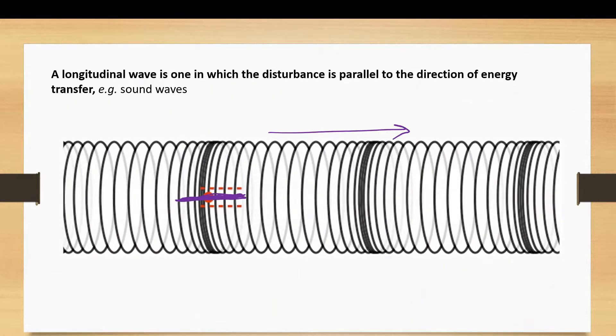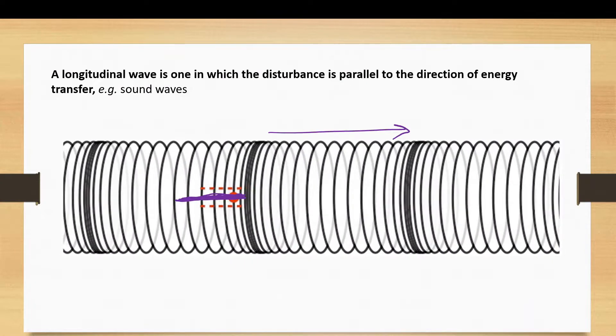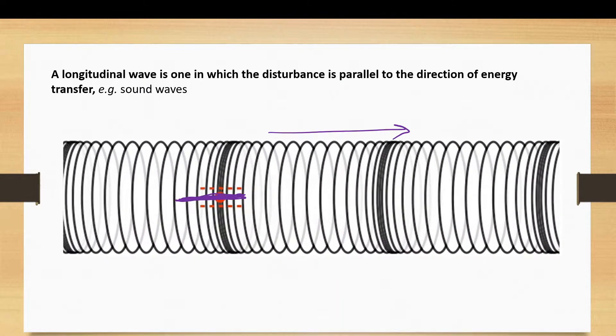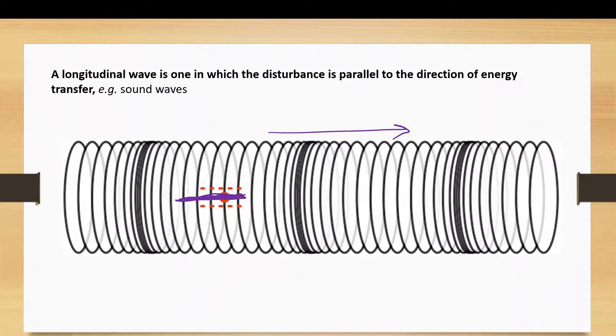Longitudinal waves are pressure variations and they cause displacement of molecules. They're made up of compressions and rarefactions. The compressions, of course, are the high-pressure areas, those squashed parts that you see passing along. The rarefactions are the low-pressure areas. They're more stretched out.